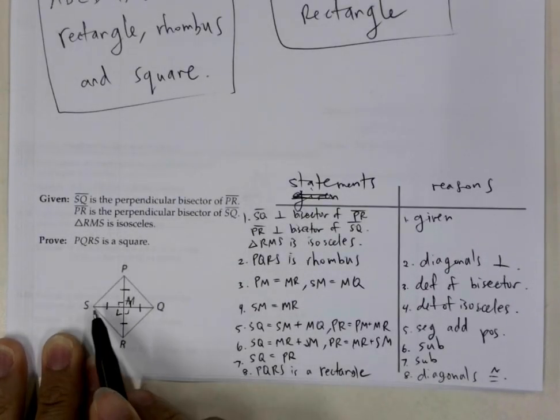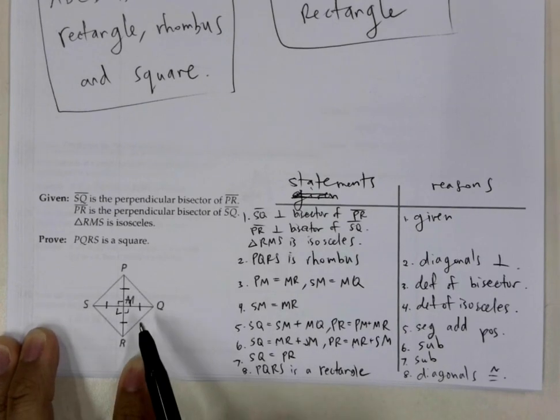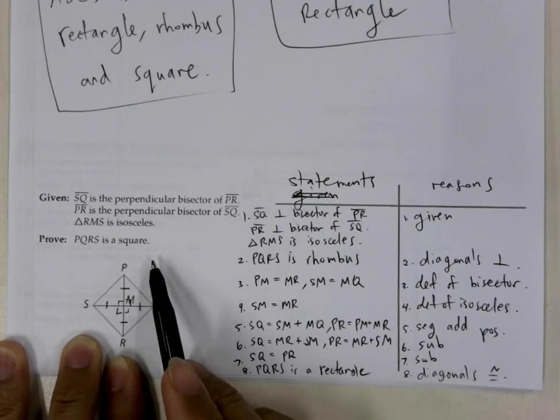Now, if RMS is isosceles, then we know that SM is congruent to MR, and so that means PM is the same length, and that means MQ is the same length. So it shouldn't be that big of a deal to prove that the shape, the parallelogram, is a square.